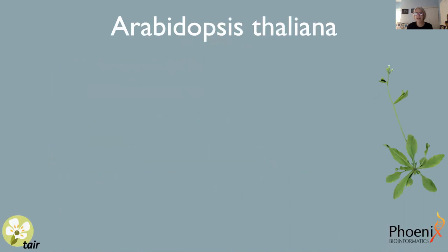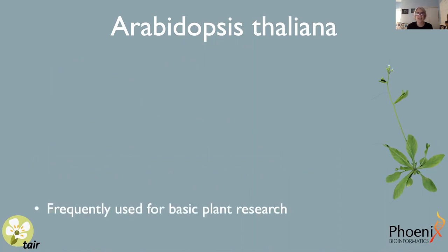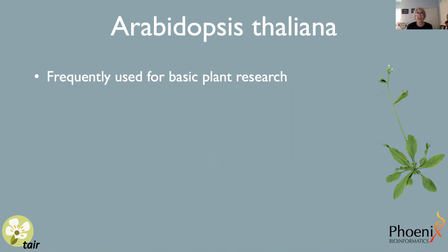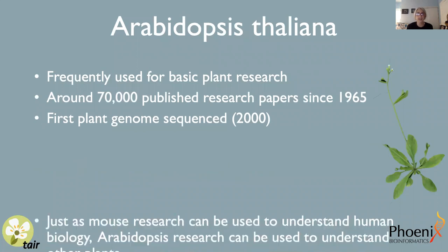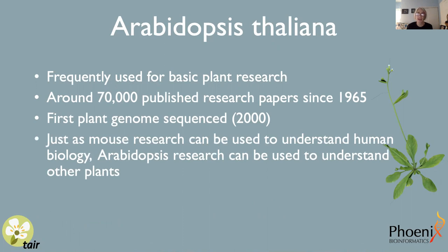First, a little background about the plant Arabidopsis thaliana, which is the subject of our database. Here you can see a picture of the organism. Arabidopsis is the most frequently used plant for basic plant biology research — a very well studied organism. There are about 70,000 published research articles since 1965. It was the first plant genome to be sequenced, with the sequence released in the year 2000. In the same way that mouse biology can be used to understand human biology, Arabidopsis research can be used to understand the biology of other plants, including important crop species.